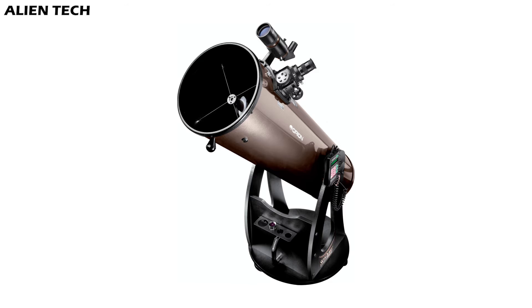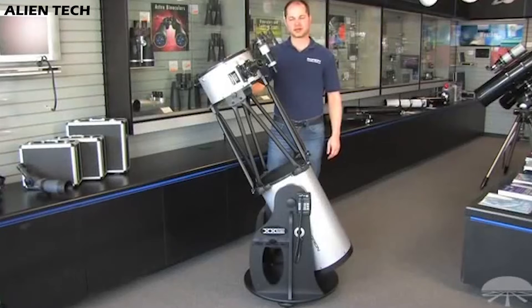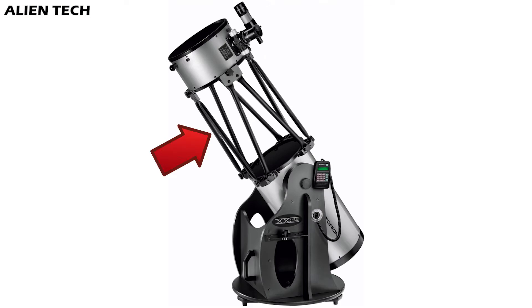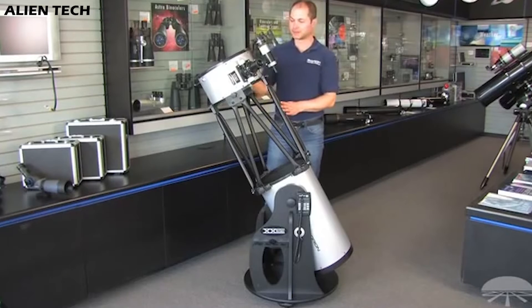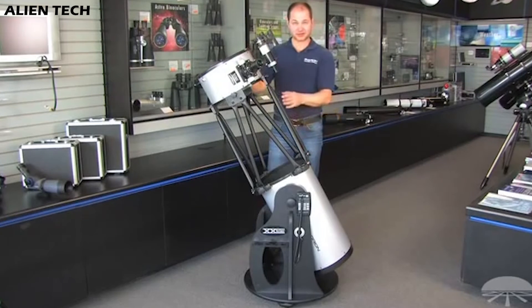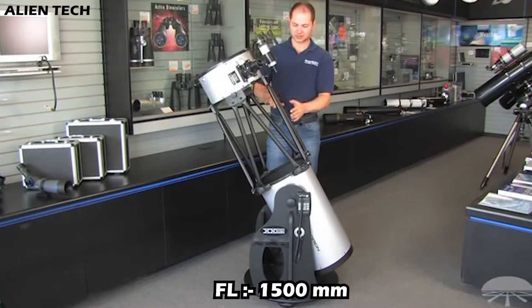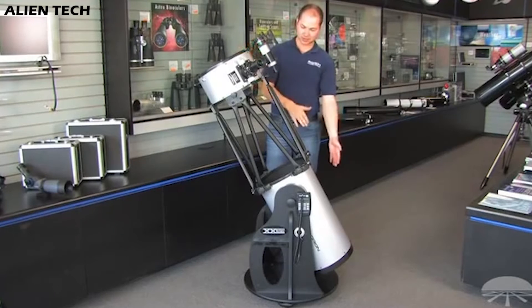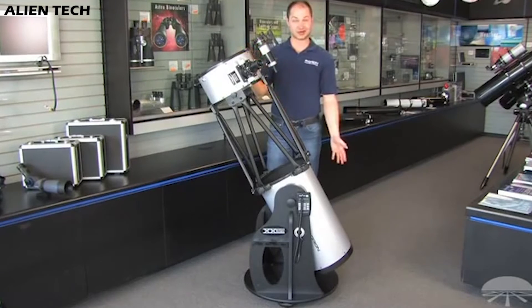The next telescope is the Orion SkyQuest XX12i IntelliScope. As 12-inch telescopes are bigger, they're very heavy, so to reduce the weight a truss tube is used. These truss tubes give excellent strength and also significantly reduce the weight. This telescope has an aperture size of 305 millimeters and a focal length of 1,500 millimeters. Its focal ratio is f/4.9 and its primary mirror is parabolic, so there will be no aberrations.